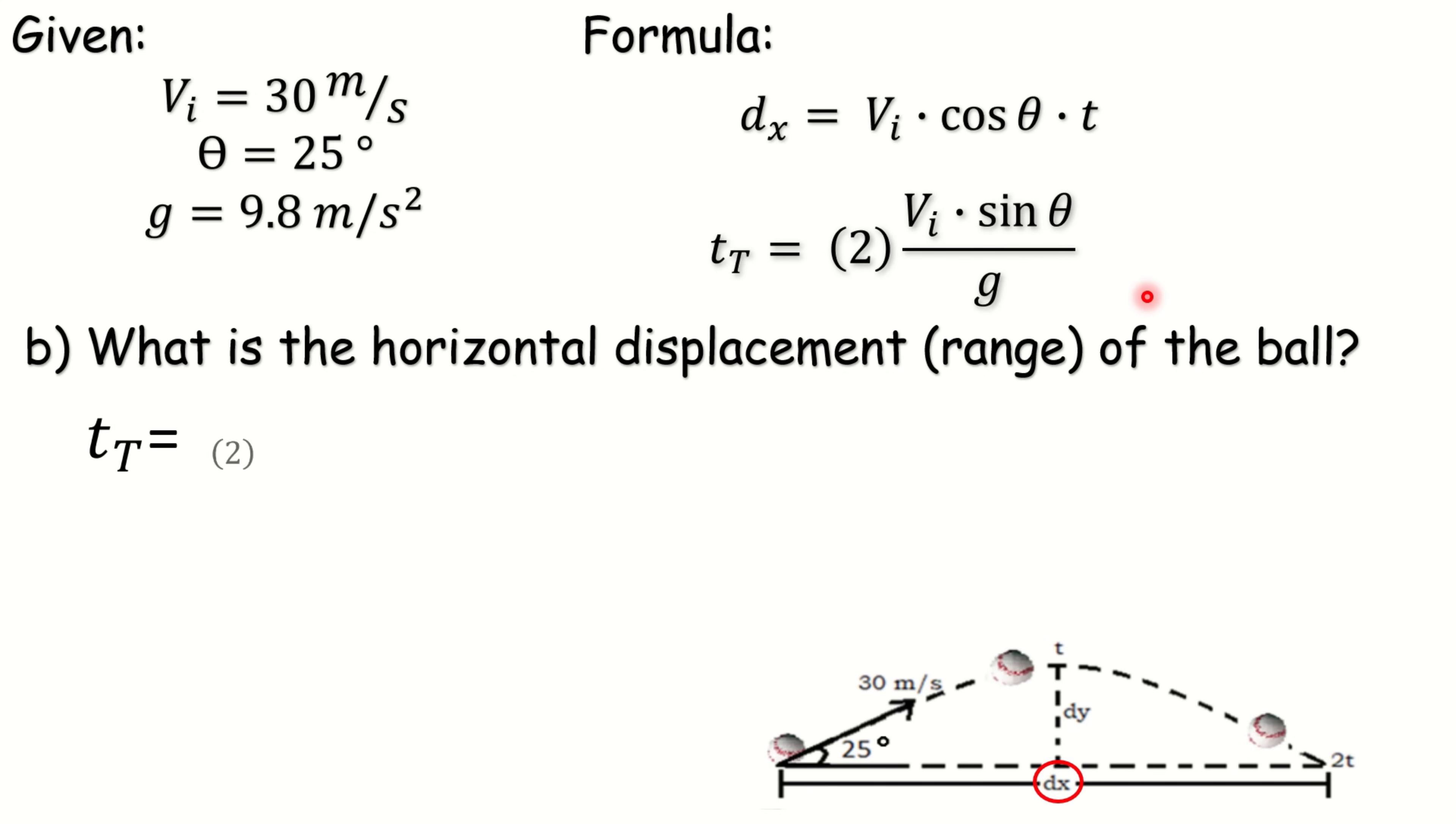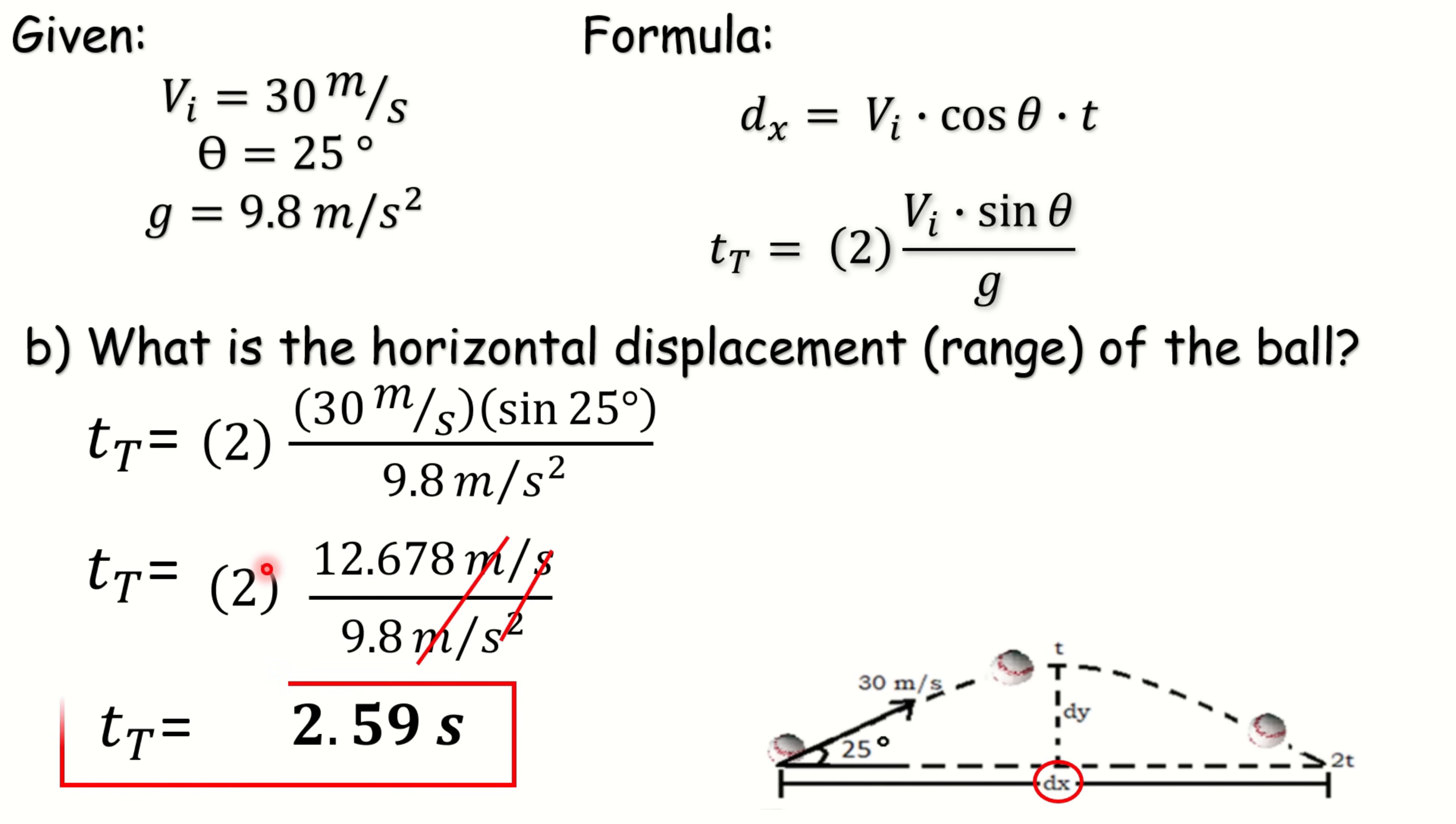Total time is equal to 2 times our VI and sine theta all over the acceleration due to gravity. 30 times sine 25 degrees is equal to 12.678 meter per second divided by our acceleration due to gravity. 12.678 divided by 9.8 times 2, we have 2.59. Let us not forget to simplify our unit by canceling and our unit is seconds. Therefore, the total time traveled by the ball is 2.59 seconds.